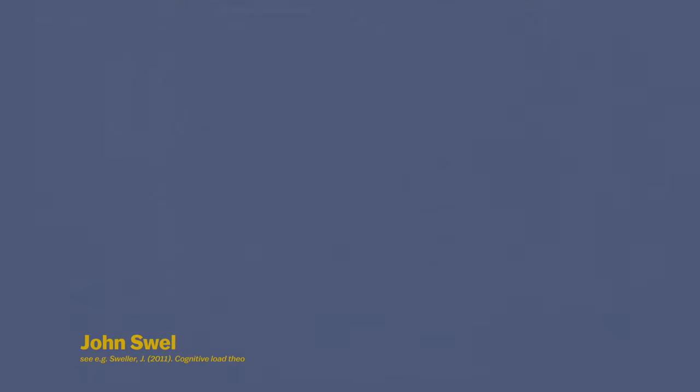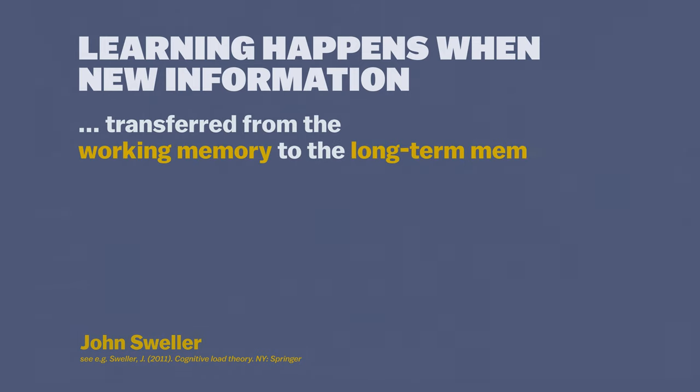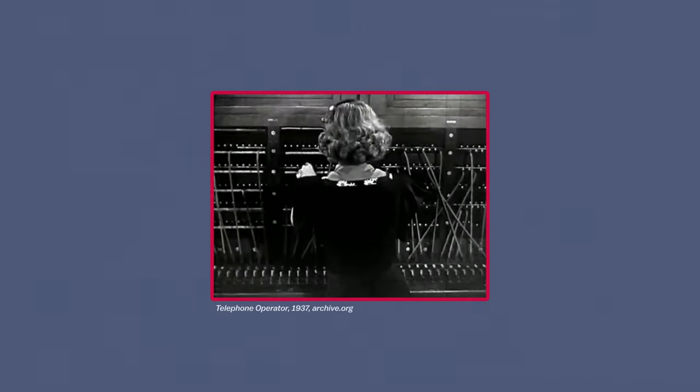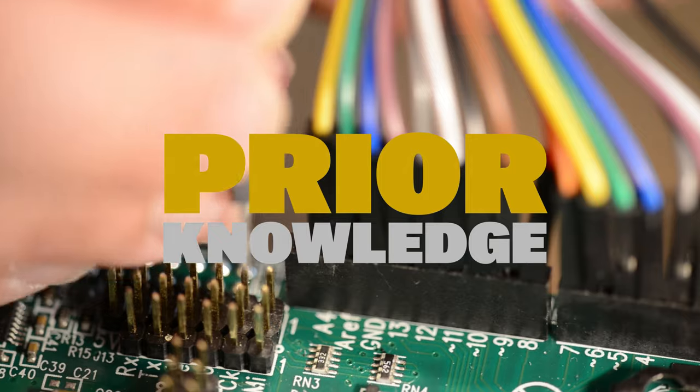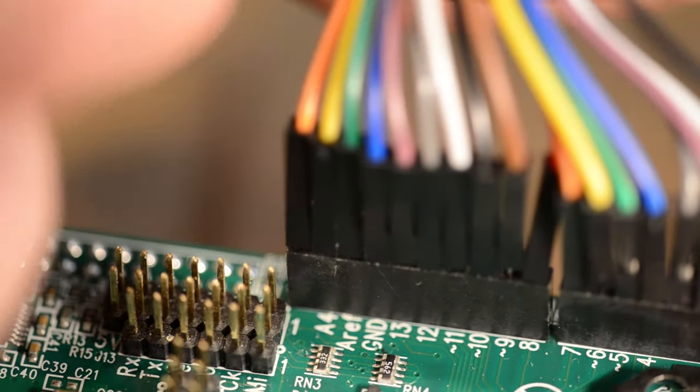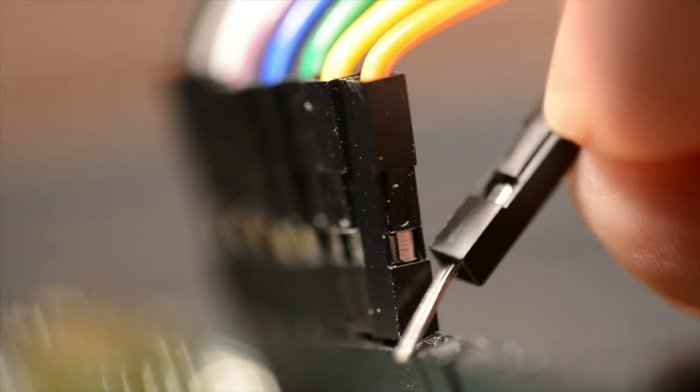According to John Sveler, an educational psychologist, learning happens when new information is transferred from the working memory to the long-term memory and becomes connected to things we already know. Think of this system as a series of wires that connect everything together. Since our prior knowledge is already firmly integrated into our long-term memory, the new knowledge will have something to which it can connect. And once it is connected, it makes it harder for us to forget.